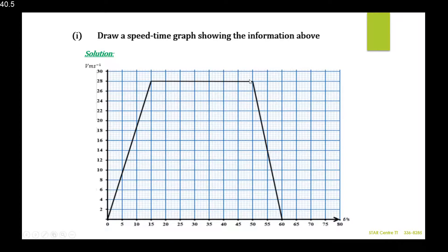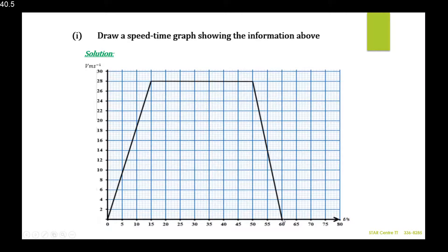Then the car has to stop at a second traffic light 10 seconds later. At 50 seconds, 10 seconds later takes us to 60 seconds and the vehicle is stopping — its velocity returns to 0. This gives us our graph: acceleration, then constant velocity, then deceleration to a stop.